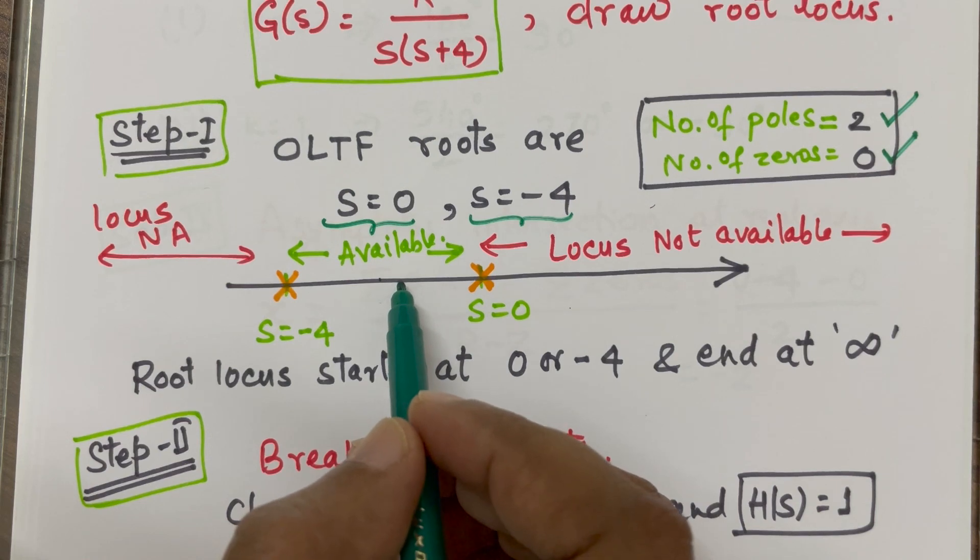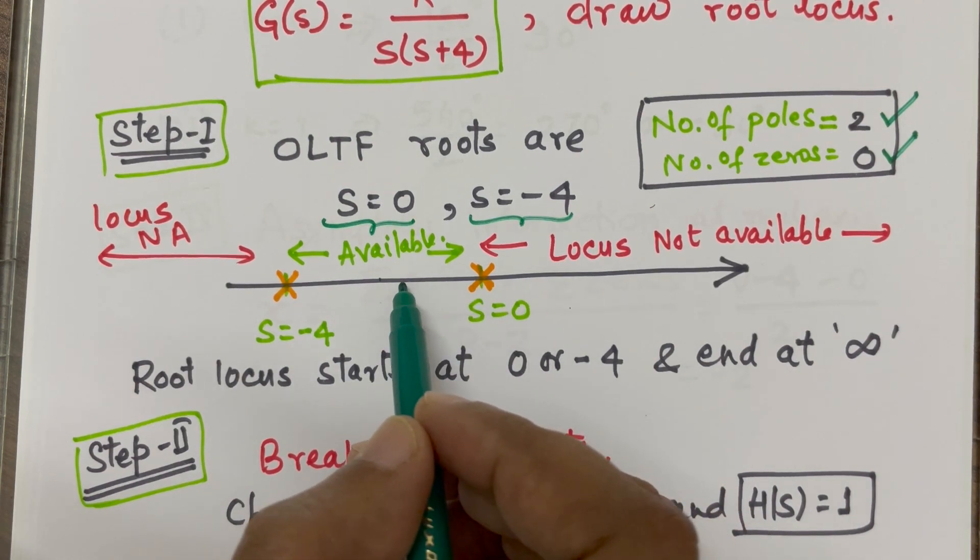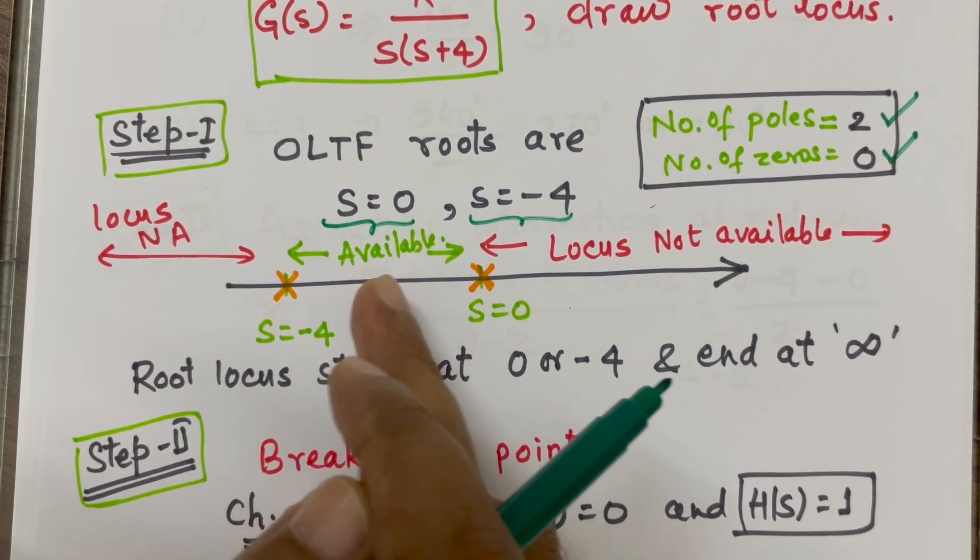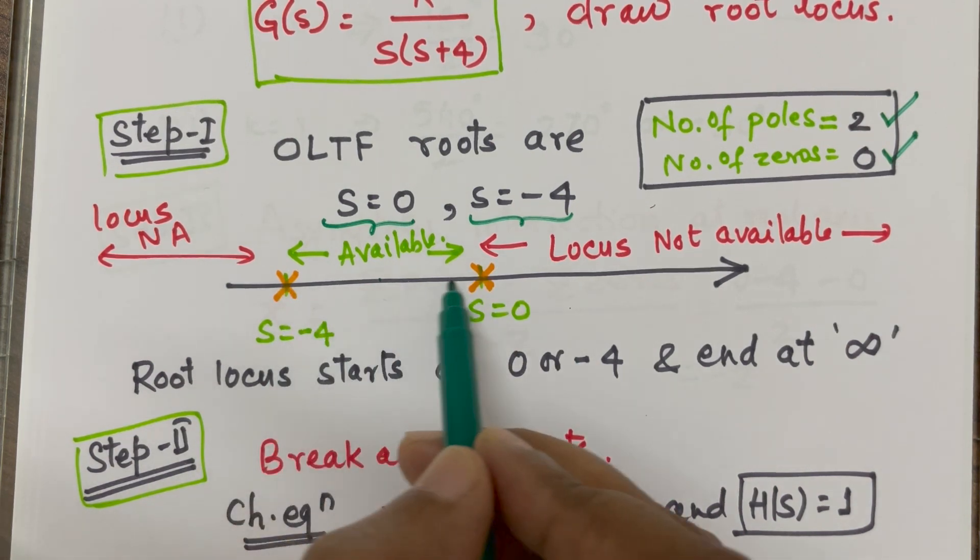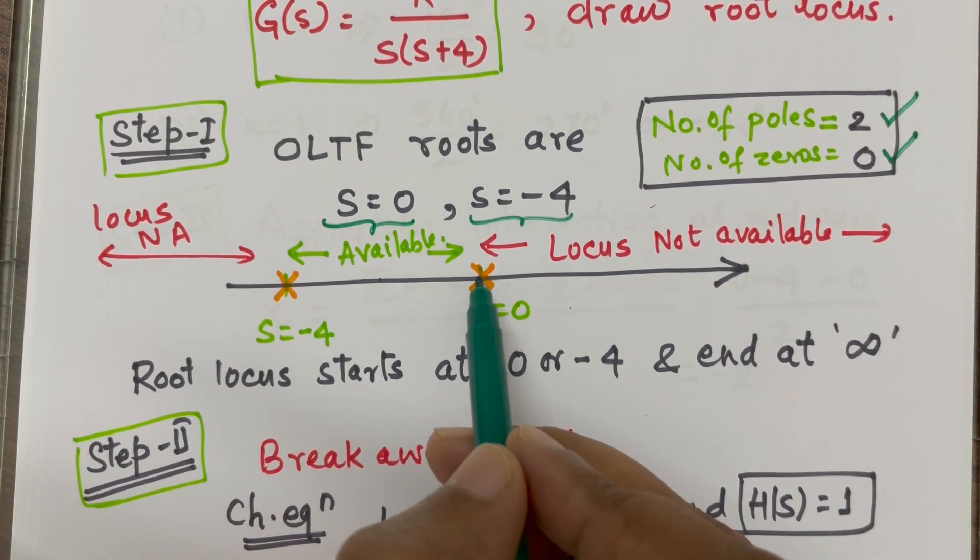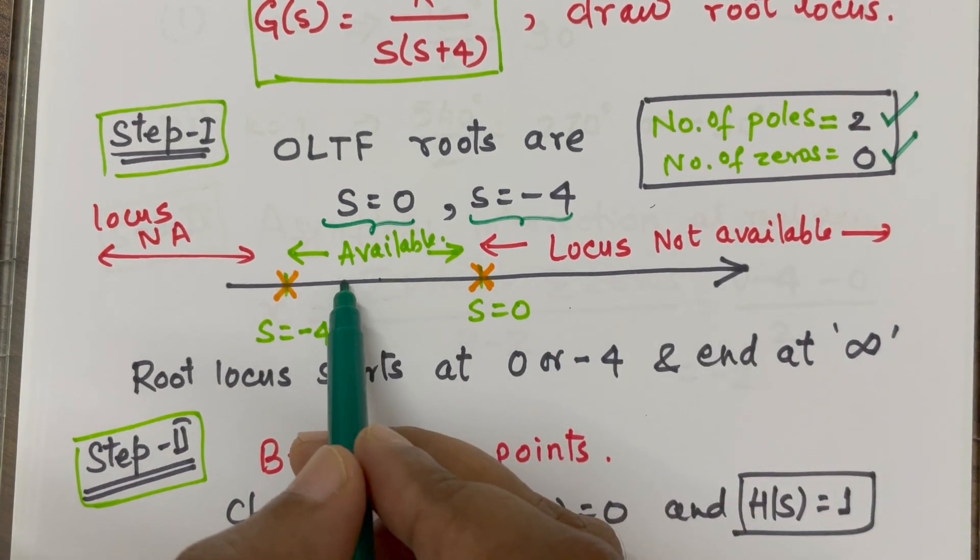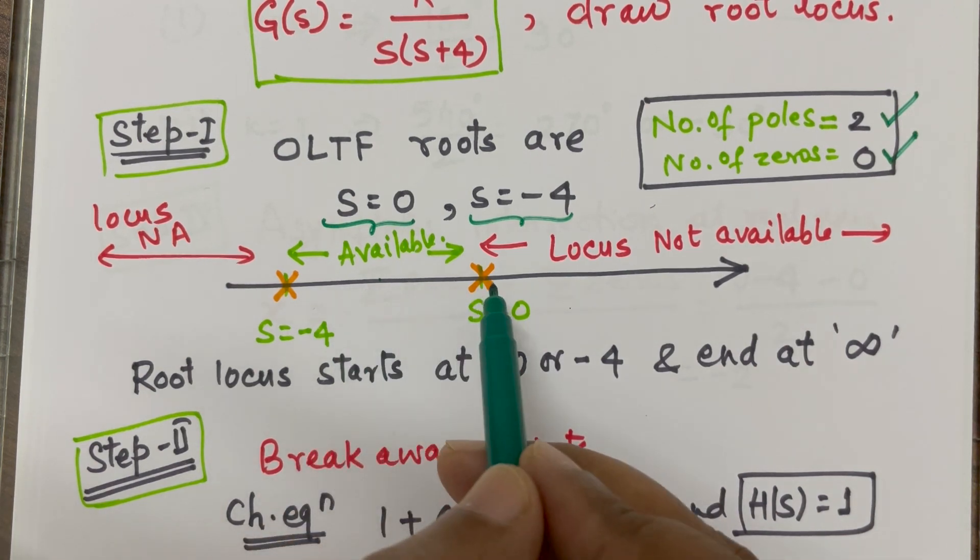So, if there will be odd number of poles plus zeros together, then there will be locus available. So, we have locus available between this, because if I take this point, there is one root in the right side. If I take this point, one root in the right side. That means, the number of root is odd. One is an odd number.